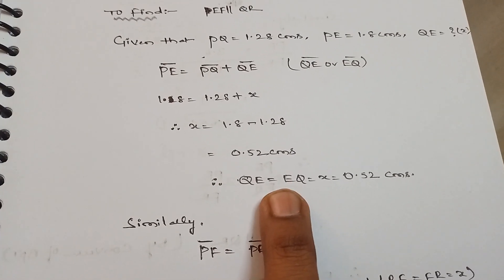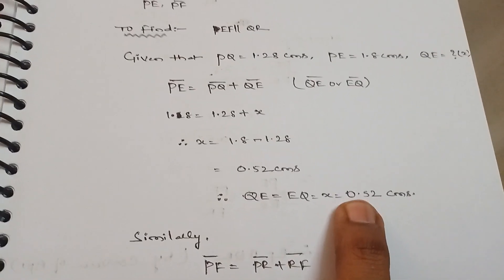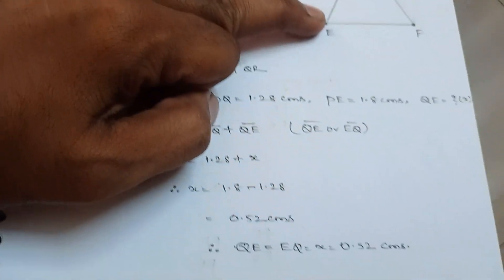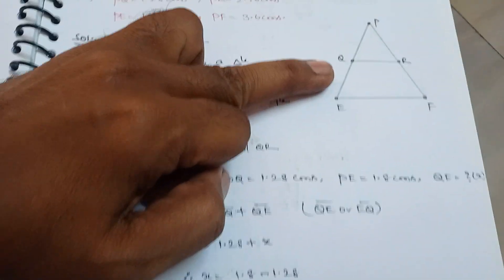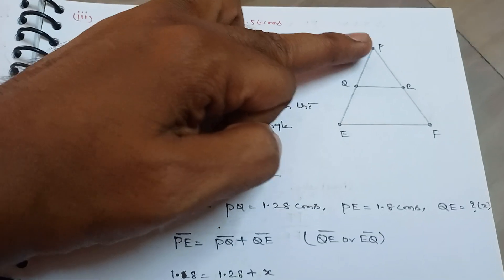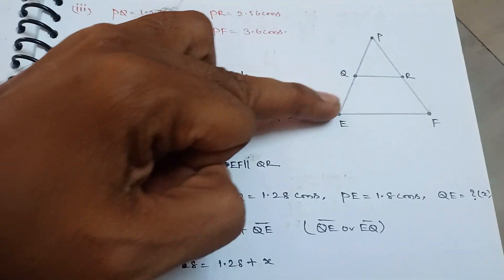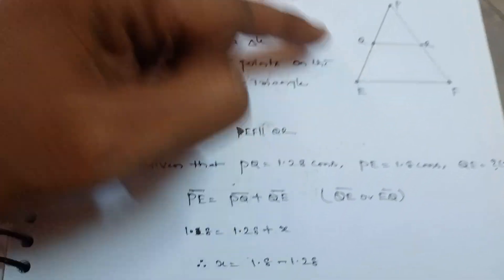Therefore, QE is equal to EQ equal to x, that equals 0.52. Therefore, the length of QE is 0.52, guys. How we got this one? By subtracting PE length minus PQ length, we get this area QE length.